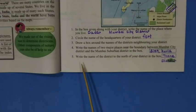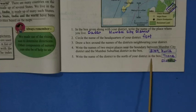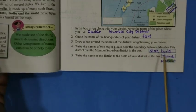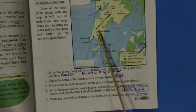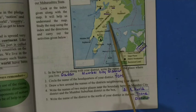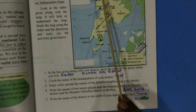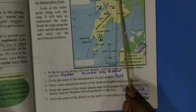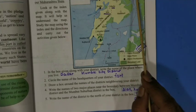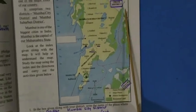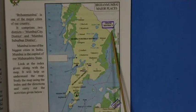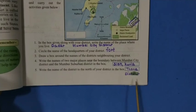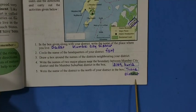Next question: write the name of the district to the north of your district. To the north of Mumbai City District is Mumbai Suburban District, and further north is Thane District. So the answer is Thane District — Thane District is to the north of Mumbai District.